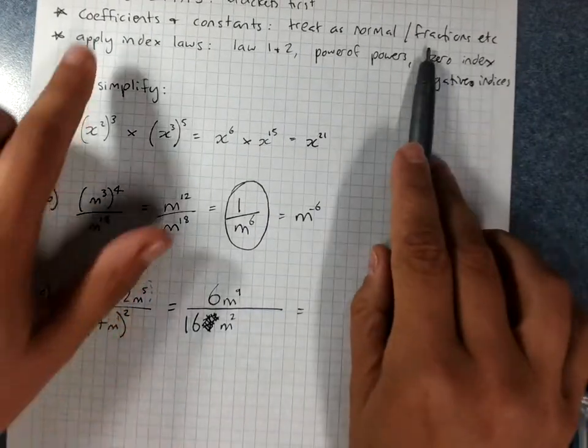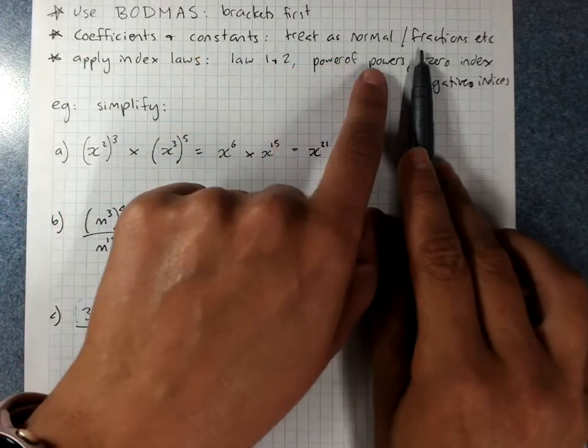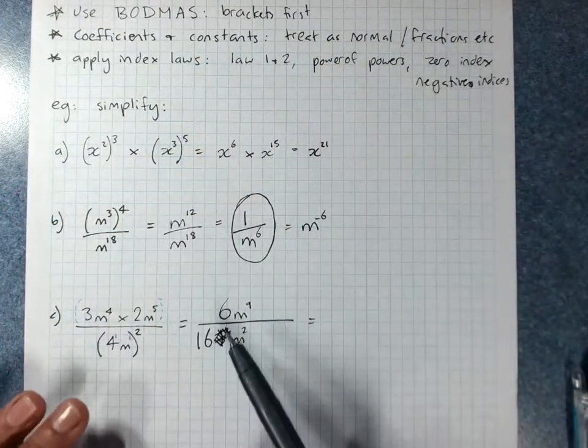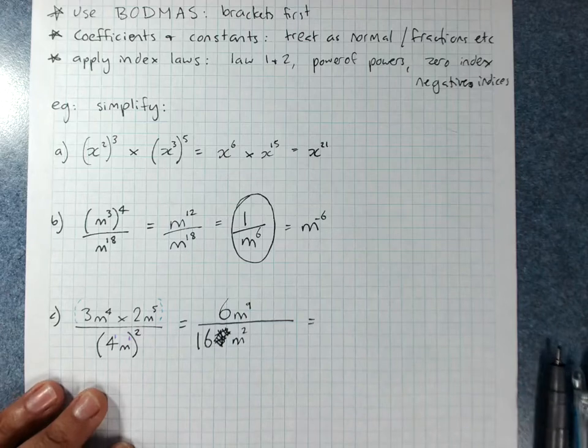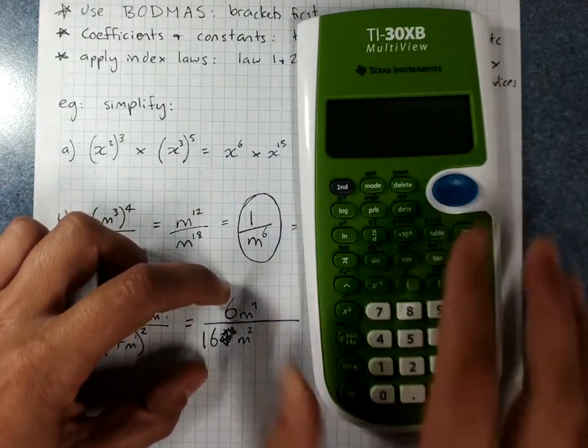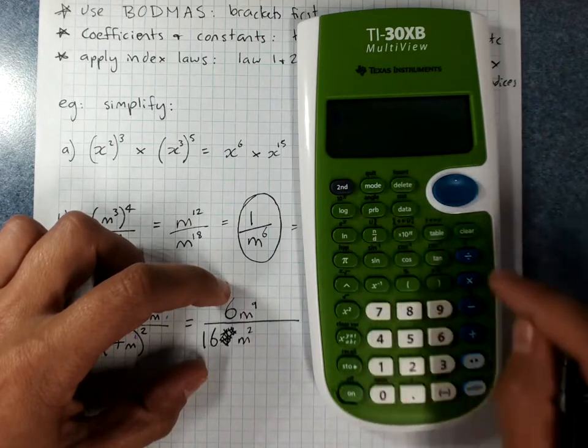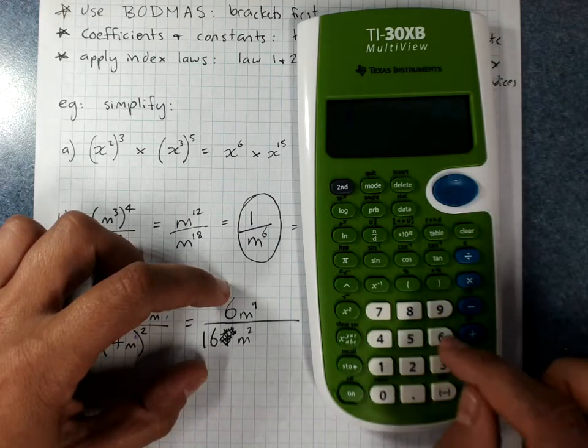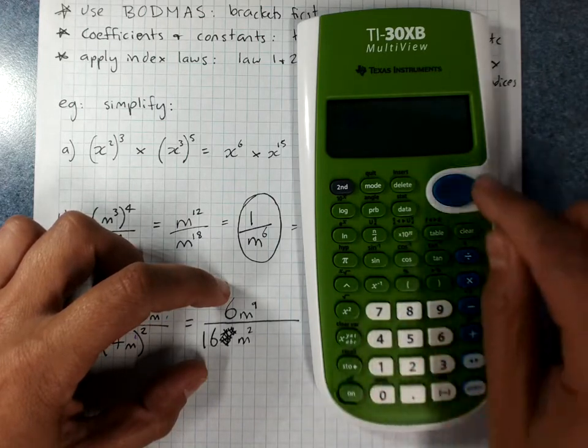Now, here where I said normal numbers and coefficients and constants, treat it as normal and do fractions. Use your fraction key. Simply, if you've got big numbers, coefficients. Just use your fraction. Simplify it. It's much easier. 6 over 16 equals,